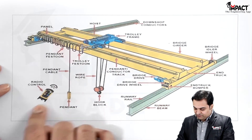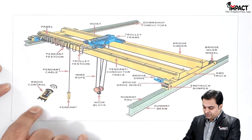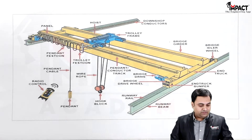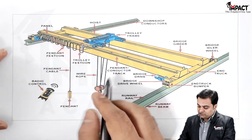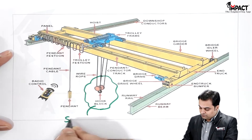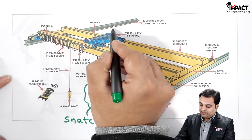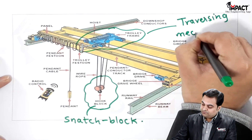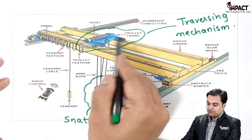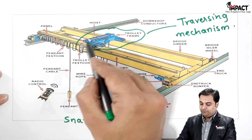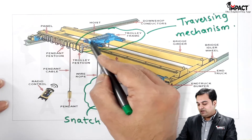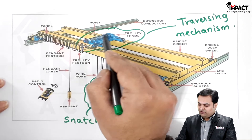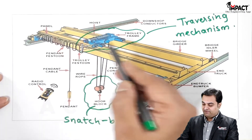The crane is operated electrically with the help of a remote control provided here. Looking at the complete design, the parts we have to design are: first, the snatch block; then the complete rope drum, which is the traversing mechanism consisting of the rope drum, the rope drum shaft, the motor, and the gearbox which provides power to the drum shaft.